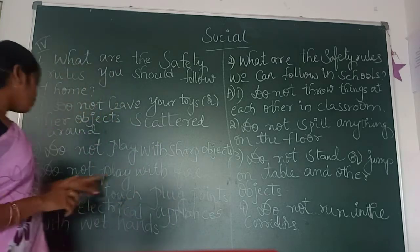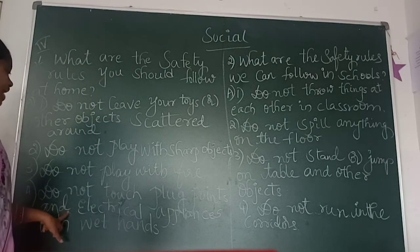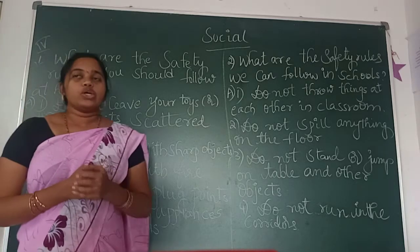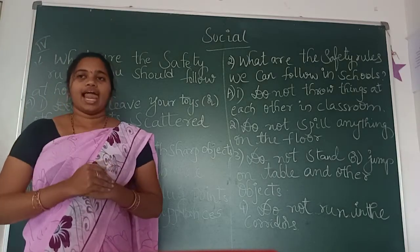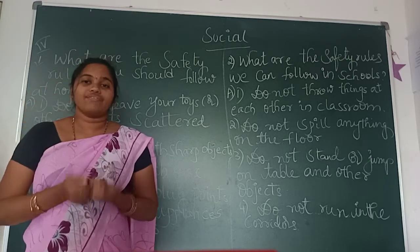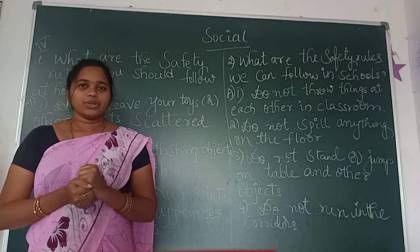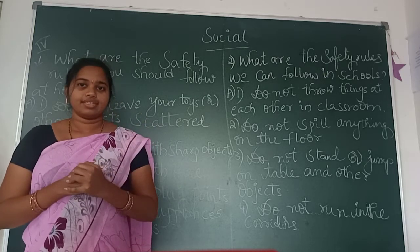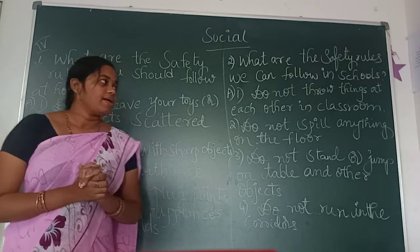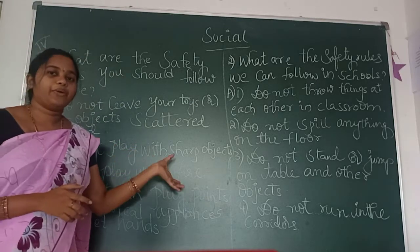Fourth point: do not touch phones and electrical appliances with wet hands. You know, children, if you touch electrical appliances or phones with wet hands, what will happen? You may get an electric shock, and sometimes it can be very dangerous. So be conscious and follow these four rules at home.